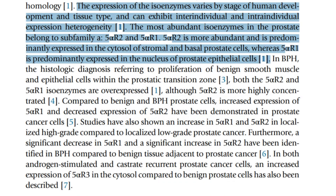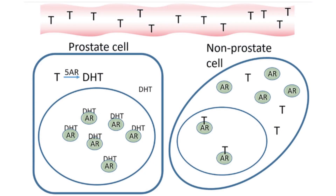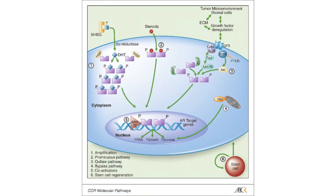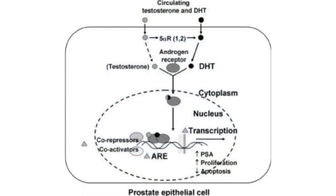Cavallo and Kaplan summarize that 5-alpha reductase exists in two isoforms with distinct distributions and functions in various tissues. In the prostate, 5-alpha reductase type 2 is more abundant and predominantly expressed in the cytosol of stromal and basal prostate cells. In contrast, type 1 is primarily found in the nucleus of prostate epithelial cells. This differential expression plays a critical role in the pathophysiology of BPH and prostate cancer.